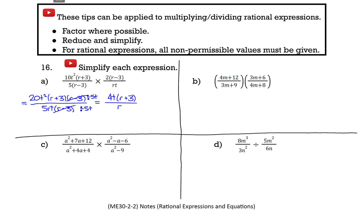The non-permissible values need to be stated before we start cancelling things out, and we can take them right from the original expression. r cannot equal 3 because of the (r minus 3) factor, and r cannot equal 0 either. We also have another variable: t cannot equal 0. So in this case, we have three non-permissible values coming from two different variables.